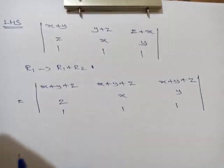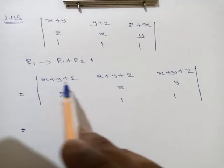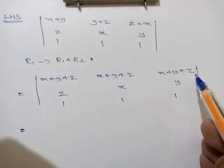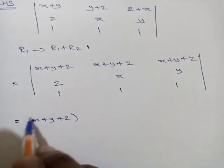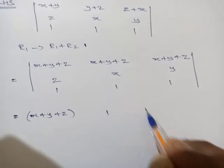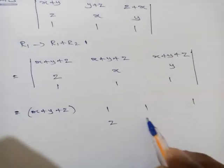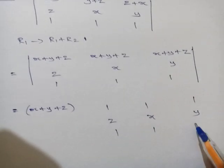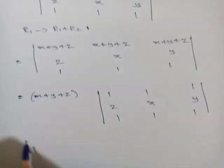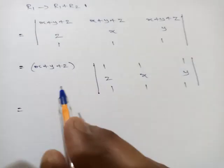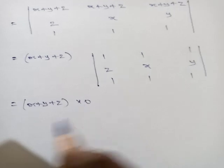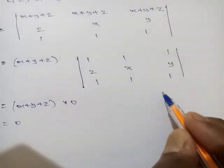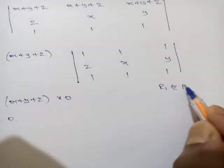Now we get this. The first row is full of x+y+z. Take x+y+z out as a common factor. So we have (x+y+z) times the determinant with rows (1, 1, 1), (z, x, y), (1, 1, 1). There are two identical rows, so this determinant becomes 0.